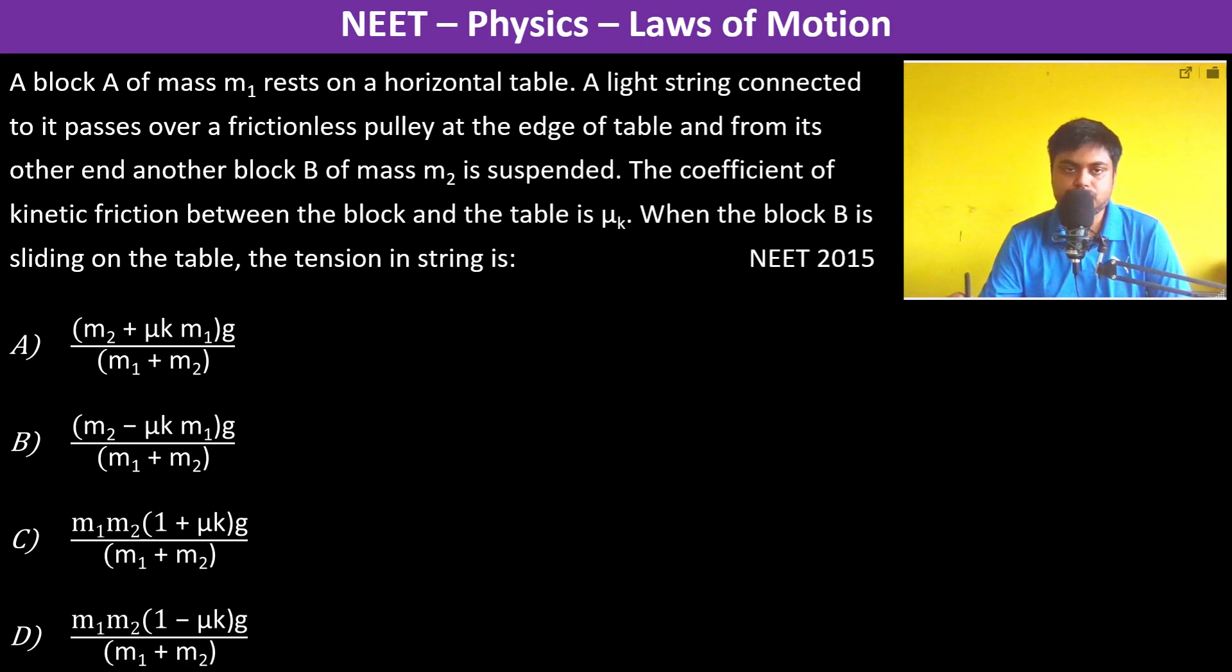A block A of mass M1 rests on a horizontal table. This is the horizontal table and this is the block A with mass M1. A light string connected to it passes over a frictionless pulley at the edge. This is the pulley and it passes like this.